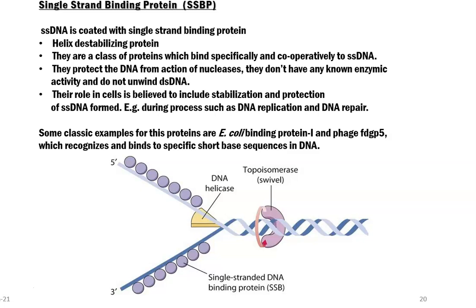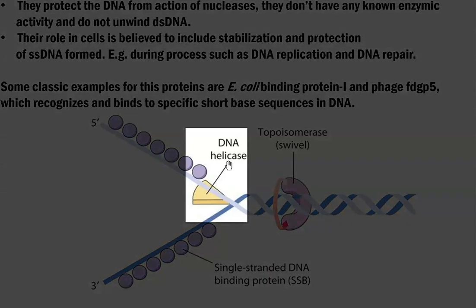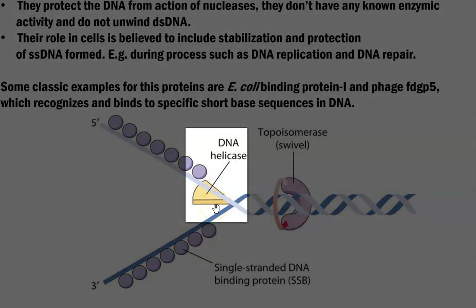Their role in the cell is believed to provide stabilization and protection for the single stranded DNA formed in the previous step by the helicase enzyme. This single strand binding protein plays a major role during DNA replication as well as during the DNA repair process. Some classical examples include the SSB protein present in E. coli and the phage-based single strand binding protein called mdgp5. They are very specific in recognizing short base sequences in single stranded DNA. In the diagram you can see the helicase enzyme binding and converting DNA into single stranded form.